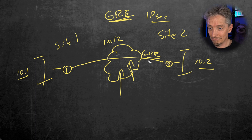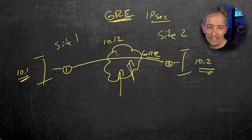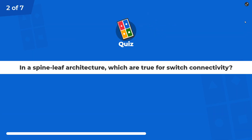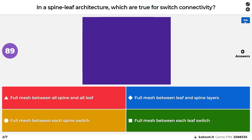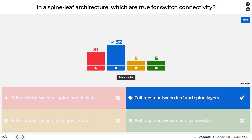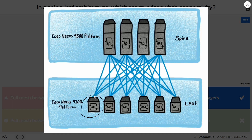We have dynamic routing protocols that advertise over the tunnel the 10.1 and 10.2 networks respectively. Question number two: In a spine-leaf architecture, which of the following are true regarding switch connectivity? The answer is a full mesh between leaf and spine layers — each leaf has a full mesh connection to every spine.